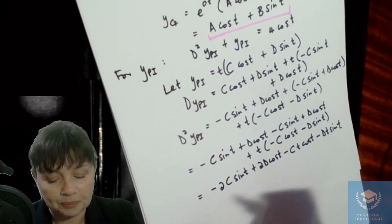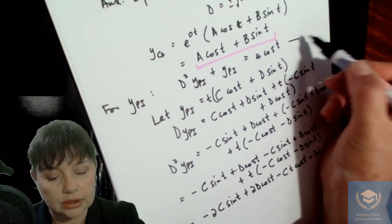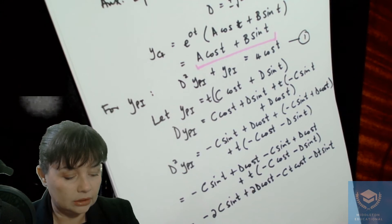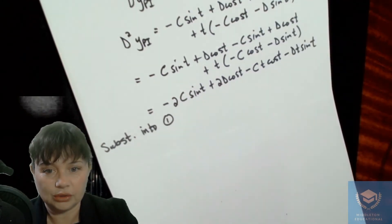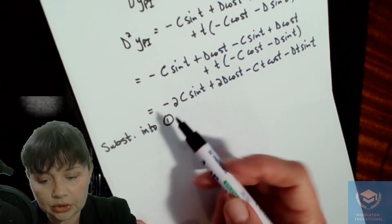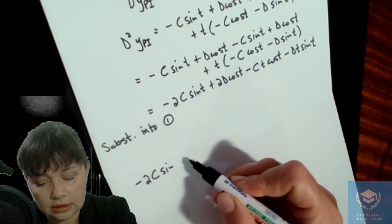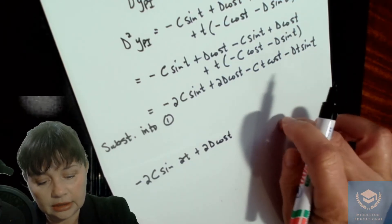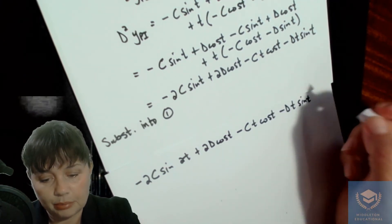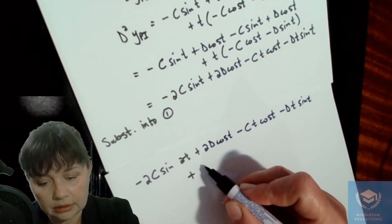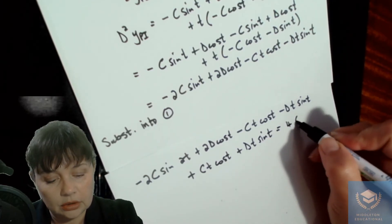Now we substitute into the original equation. Taking the second derivative plus y_pi, we get: (−2c sin t + 2d cos t − ct cos t − dt sin t) + (ct cos t + dt sin t) = 4 cos t. Let's spread this out on a new page to keep things clear.